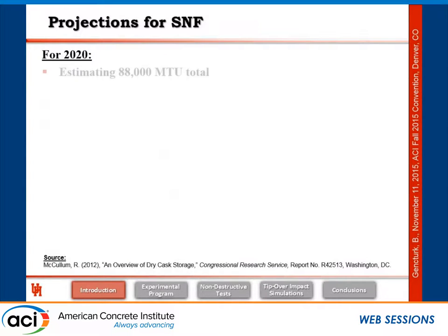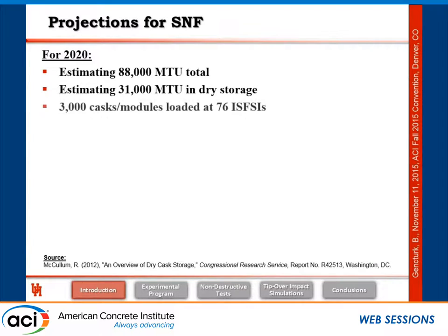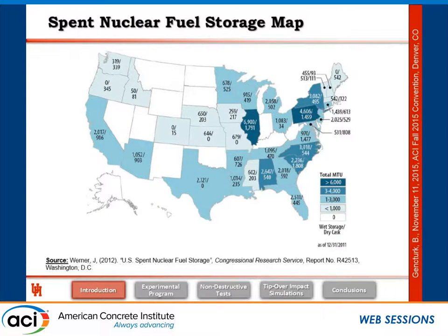Looking at projections for 2020, there will be an estimated 88,000 tons of spent nuclear fuel, of which 31,000 tons will be in dry storage. The number of cask modules will double by 2020 — from about 1,600 currently to approximately 3,000 casks loaded at 76 independent sites. The number of dry cask storage sites and the total number of casks will both increase significantly.